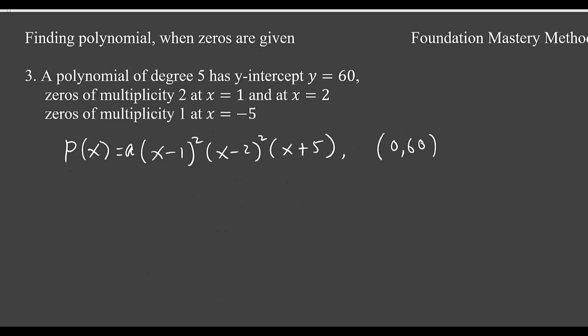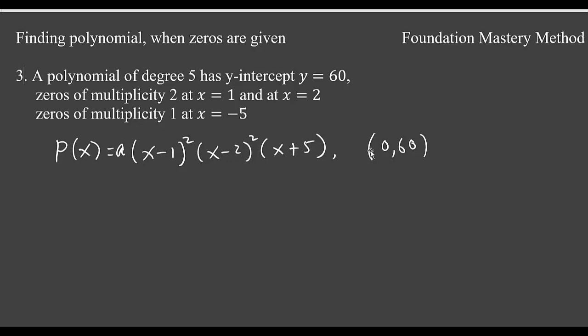We are taking a third example. It says a polynomial of degree 5 has y-intercept y equals 60 and then zeros are like this. So then you form the equation of polynomial like a(x minus 1) squared (x minus 2) squared and then (x plus 5). So we see now that y-intercept is 60, therefore the polynomial passes through the point (0, 60).